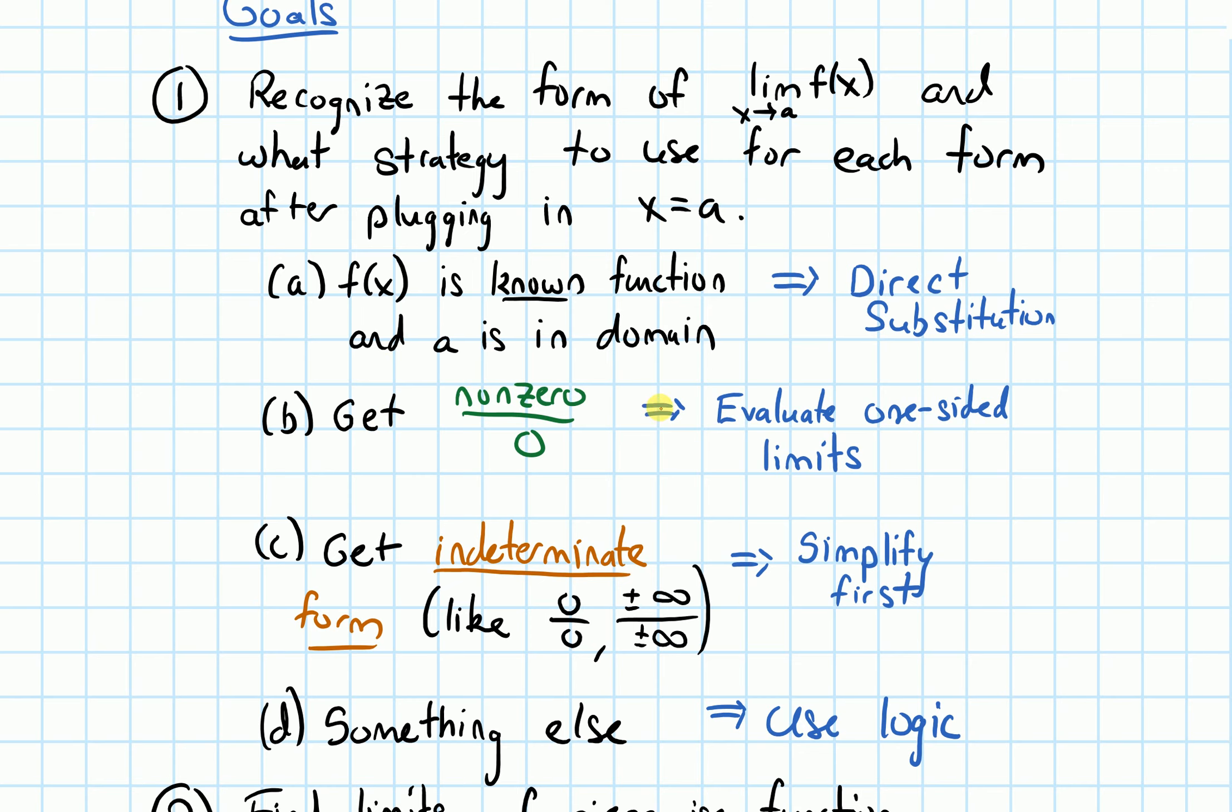The third case is if we get what's called an indeterminate form, and that's something like zero over zero, or infinity over infinity, maybe with some negatives in there. And in a situation like that, we simplify first.